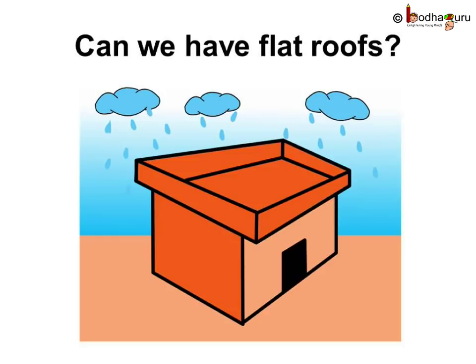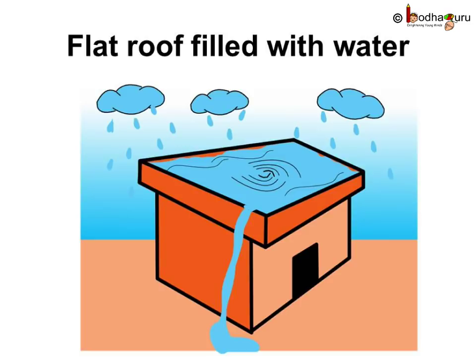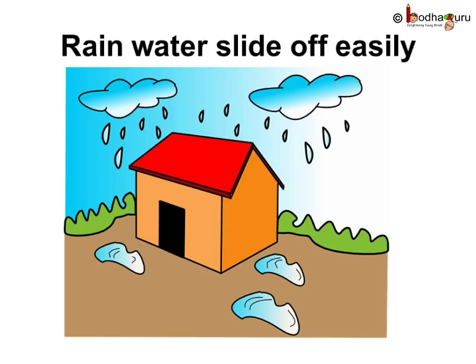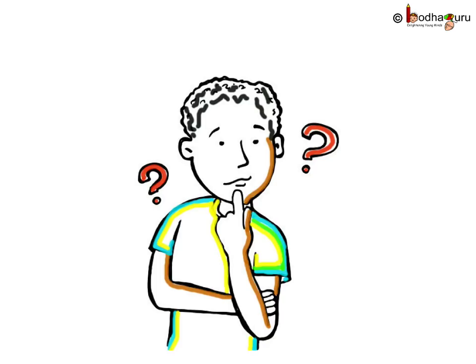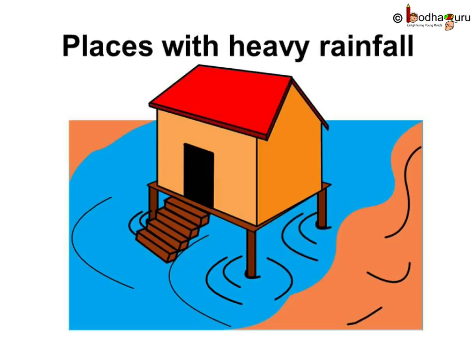What kind of houses should be there where it rains a lot? Firstly, we cannot have flat roofs as the rain water will collect and damage the house. So they should have sloping roofs. Secondly, if the house is on the ground, the water will enter the house and all the rooms will get filled with water. How about raising the house? Now the water won't be able to enter the house. These houses are called houses on stilts.